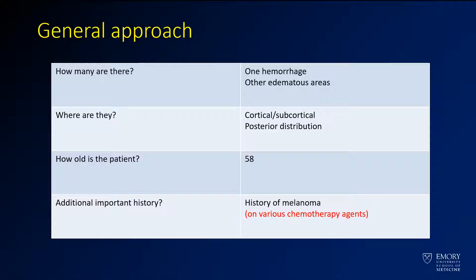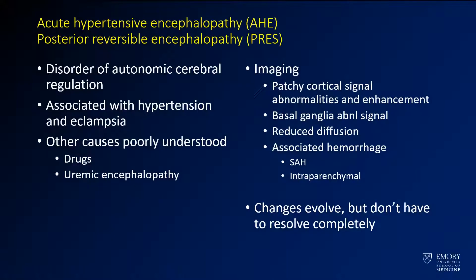However, because of the patient's history of melanoma, this patient has received various chemotherapy agents — that's something you have to think about. This ended up being a case of acute hypertensive encephalopathy, or PRES. This is a disorder of autonomic autoregulation. Typically you'll see it with hypertension, but there are a number of other causes including medications, many of which are chemotherapy. So if you have a cancer patient, or someone with lymphoma or leukemia, definitely be thinking about PRES.